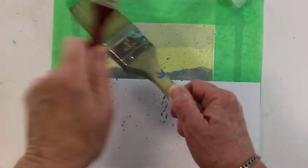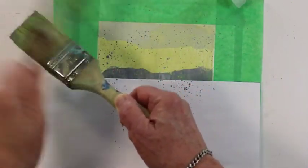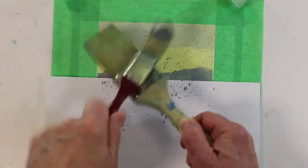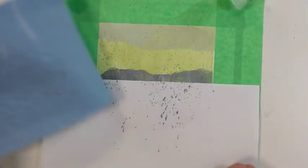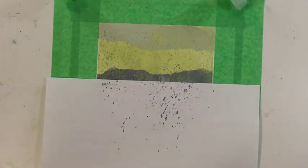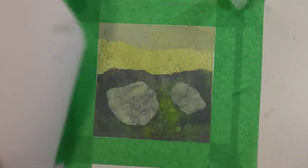Then I took a shop towel and I pressed it onto the spatters, just to soften them a little bit, soak up the extra paint that's on the surface. And here's the result.